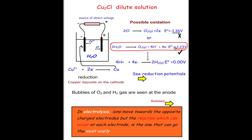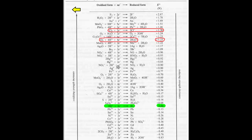The reduction potential of minus 1.23 volts for water is higher — less negative — than minus 1.36 volts for chloride. Looking at the standard reduction potentials, minus 1.36 versus minus 1.23, the water oxidation is more likely to occur. Once this happens, the hydrogen ions react with electrons to form hydrogen gas, since hydrogen has an E° value of zero.